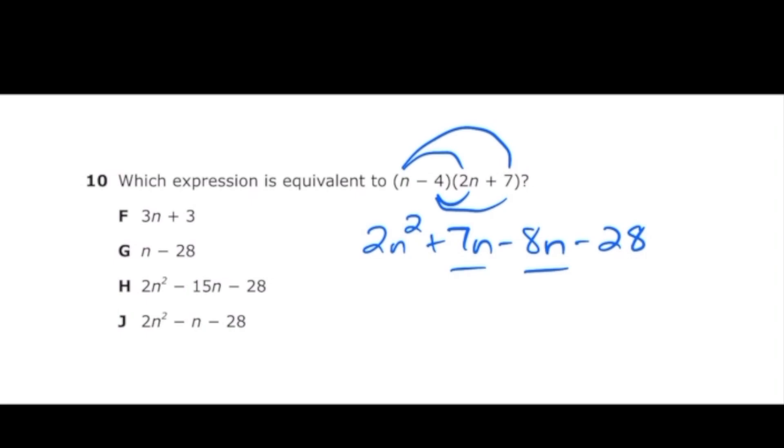From here, I just need to combine my like terms. So 7n and negative 8n are going to make negative 1n or just negative n. So my answer is 2n squared minus n minus 28, and that's going to be letter J.